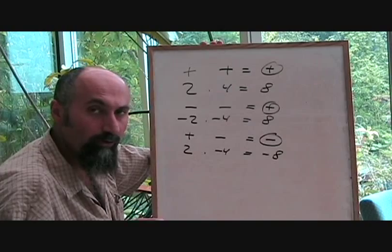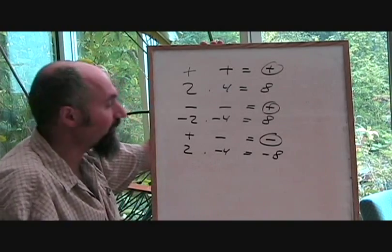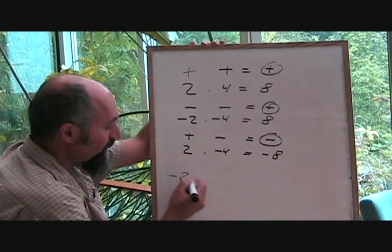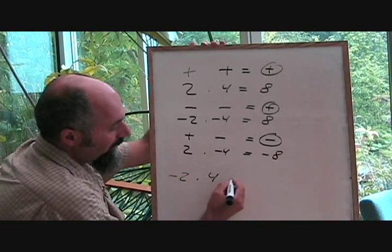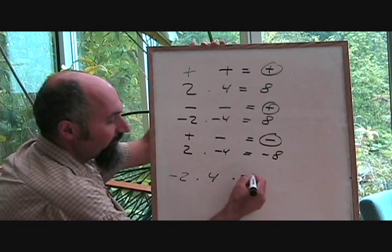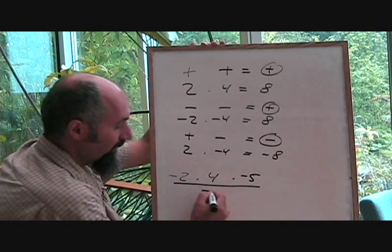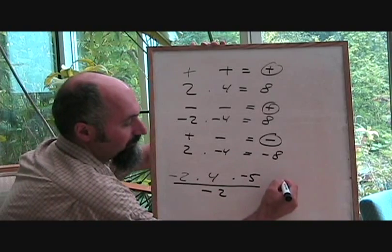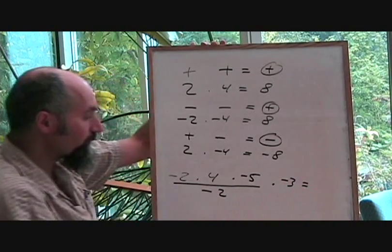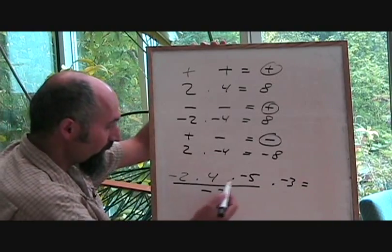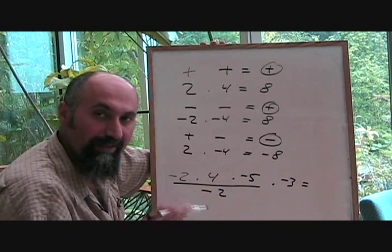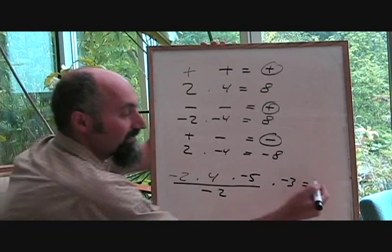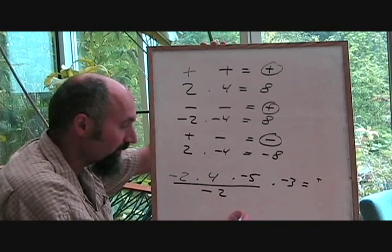So before you do any multiplication or division, you should know if the answer is going to be positive or negative. For example, we've got a little room down here. Let's try that. Let's try negative 2 times 4 times negative 5 divided by negative 2 times negative 3. So right now, we have 1, 2, 3, 4 negative numbers. 4 negative numbers is an even number. So the answer is going to be positive no matter what it turns out.